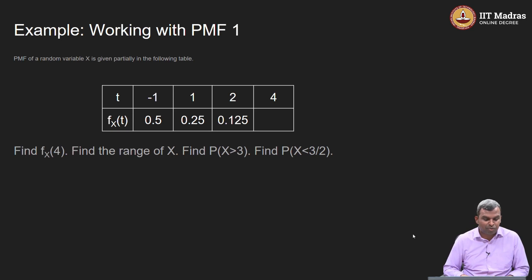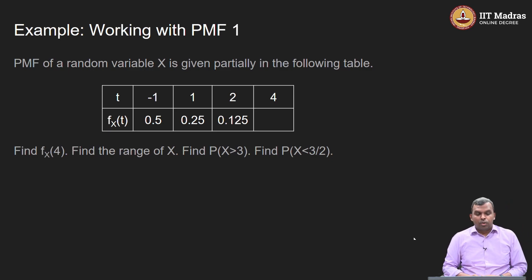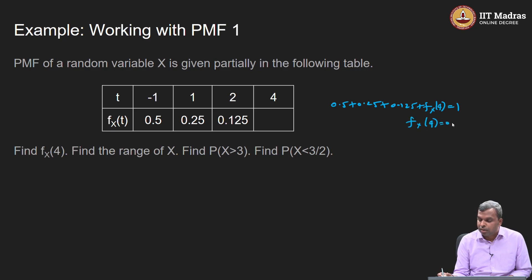Let me give you a couple of examples of what is this working with the PMF. Here is a table and there is a PMF. Here is a skill of working with a PMF, a PMF of a random variable which is partially specified. I am telling you that the range is -1, 1, 2, 4 and then the PMF takes values 0.5, 0.25, 0.125 and the next one is blank and then you have to find fx of 4. What is the property I will use? Everything is between 0 and 1 and they have to add up to 1. So 0.5 plus 0.25 plus 0.125 plus fx of 4 equals 1, you get fx of 4 equals 0.125. That is the first skill, quick fill up.